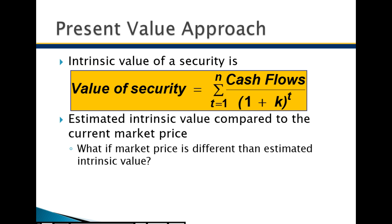The intrinsic value of a security is simply the present value of future cash flows. We take each year's cash flow and divide by (1 + K) to the power T, where T represents time in years and K represents the cost of capital. K can go by many names: cost of capital, discount rate, interest rate, or required rate of return.